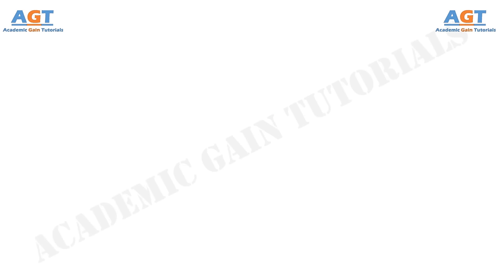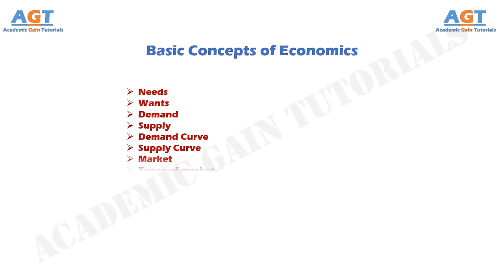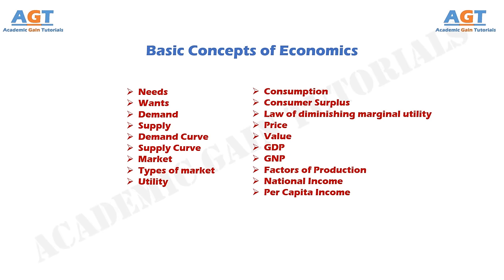After this class, we will have generated a brief idea about needs, wants, demand, supply, demand curve, supply curve, market, types of market, market equilibrium, utility, consumption, consumer surplus, law of diminishing marginal utility, price, value, GDP, GNP, factors of production, national income, and per capita income.